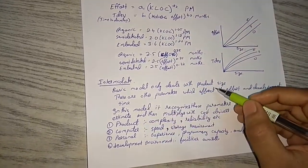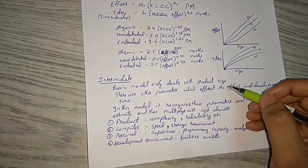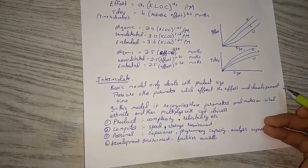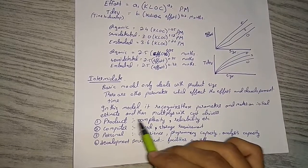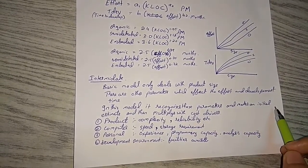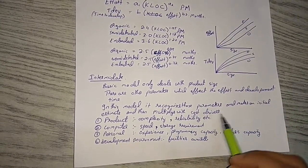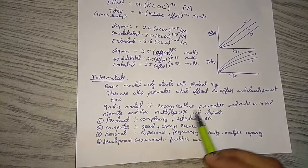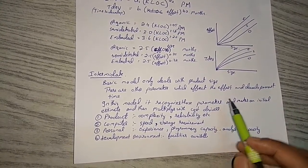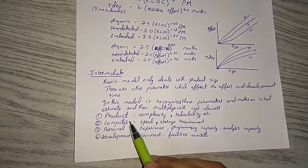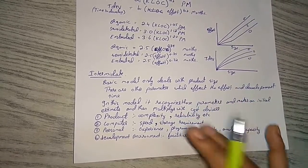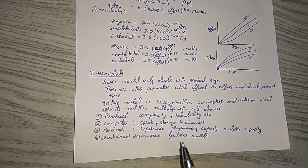In the basic model we dealt with only the product size. That means we only thought about the effort and the development. But in the intermediate model, we recognize 15 parameters that make an initial estimate and then multiply with the cost drivers. These 15 parameters decide the actual effort and actual development time.